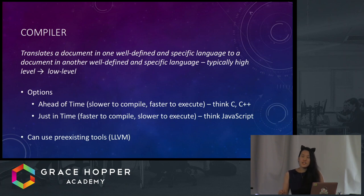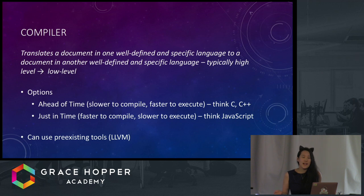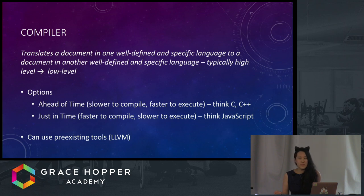Meanwhile, a compiler translates one language into another. For example, think of Google Translate and how it translates German into Japanese, or how an HTML rendering engine will translate HTML into a visible website. But typically, when we talk about compilers, we talk about translating high-level languages to low-level languages.